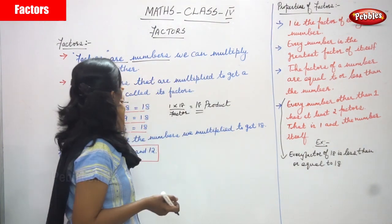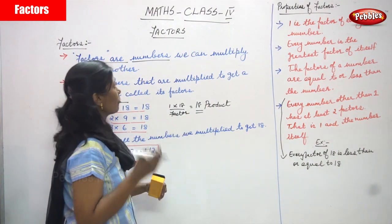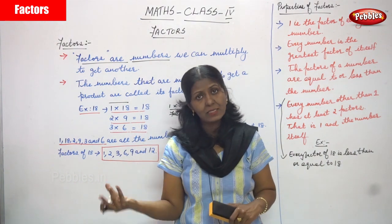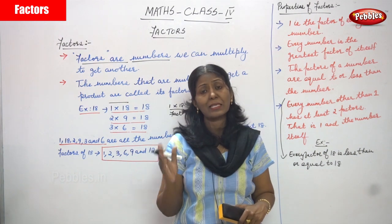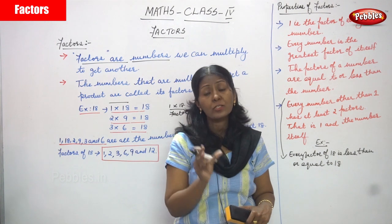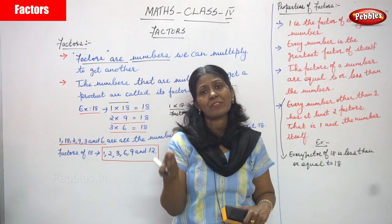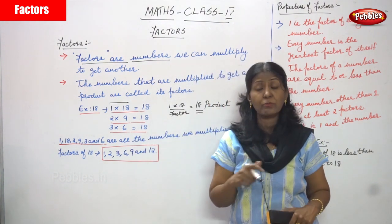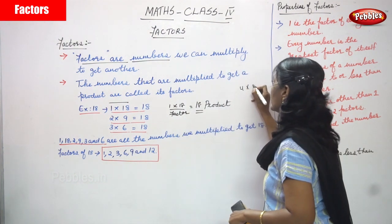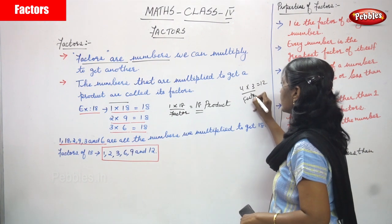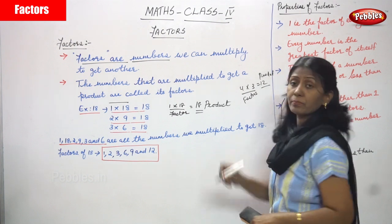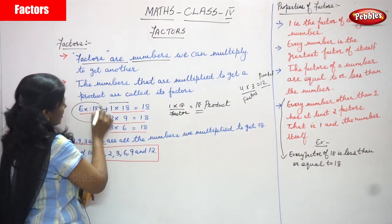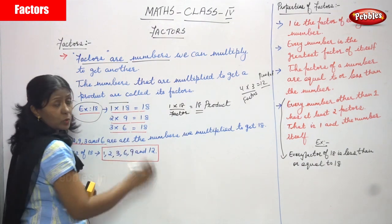Factors are numbers we can multiply to get another result or answer, called the product. Both numbers multiplied together are factors. For example: 1 into 18 equals 18, 2 into 9 equals 18, 3 into 6 equals 18. Also 4 into 3 equals 12 — so 4 and 3 are factors and 12 is the product. Going back to 18: 1 into 18 equals 18, 2 into 9 equals 18, 3 into 6 equals 18.